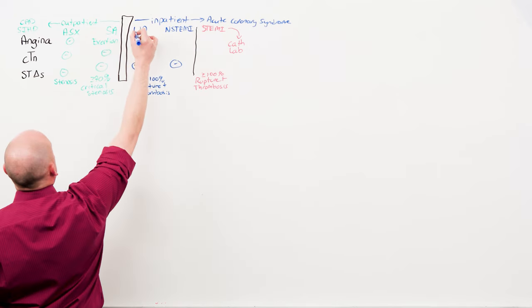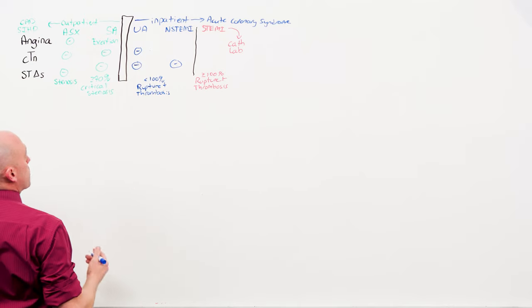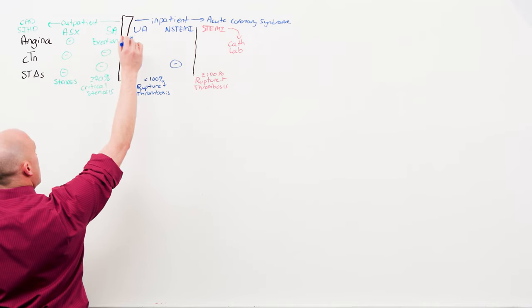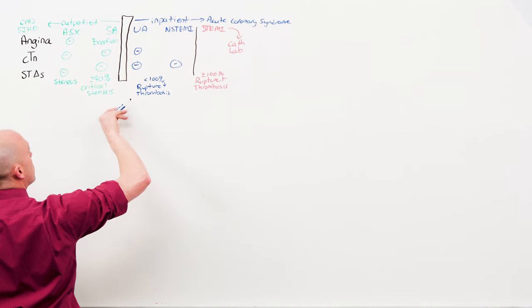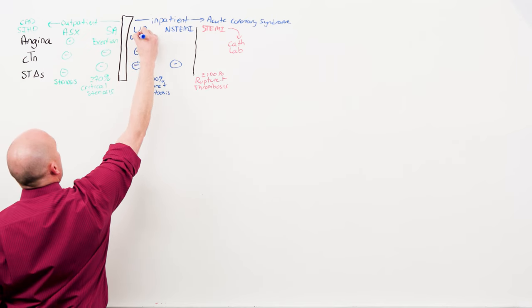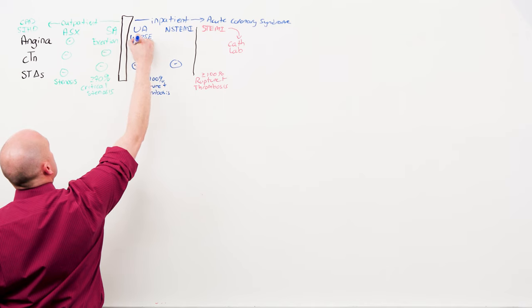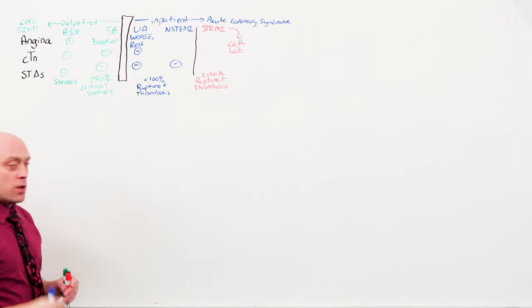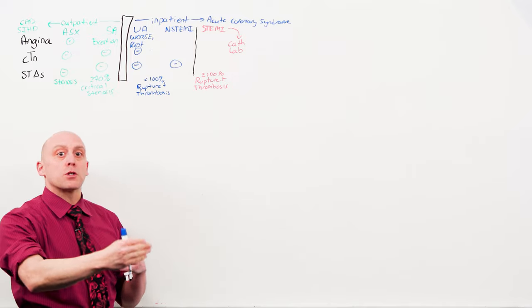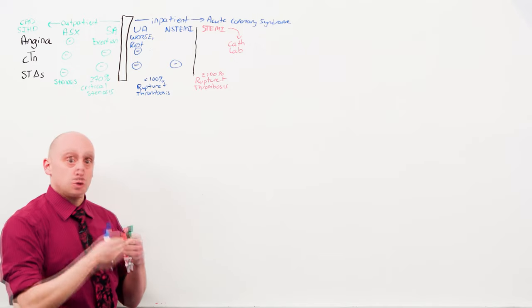Unstable angina will not show elevation in troponins because there's no infarction, there's no I in the acronym. But unstable angina is a rapid change of the lumen's caliber, and so it is going to present like stable angina, only it will be worse. And the pain may be present at rest. Worse means if the person goes as far as they used to be able to, the symptoms are much worse. And they get the same symptoms that they used to get, but only able to go a shorter distance.